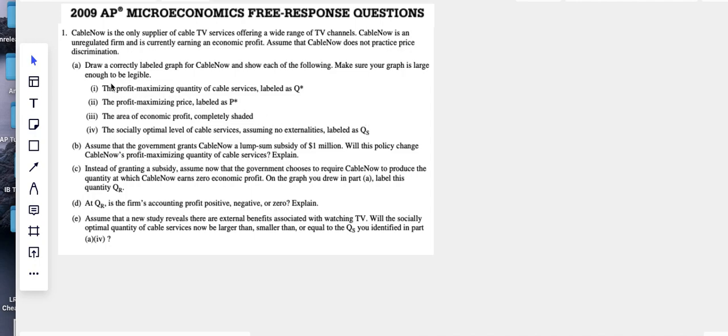Hey guys, Charles here. I'm doing 2009 AP Micro number one. This looks like a monopoly question. Number one, the only supplier of cable TV monopoly is an unrelated quality earning an economic profit and it does not price discriminate.